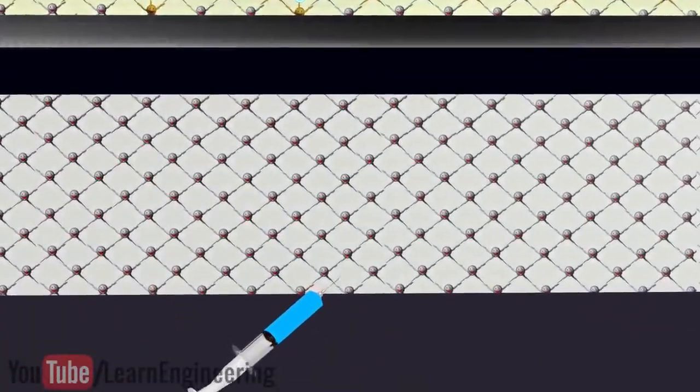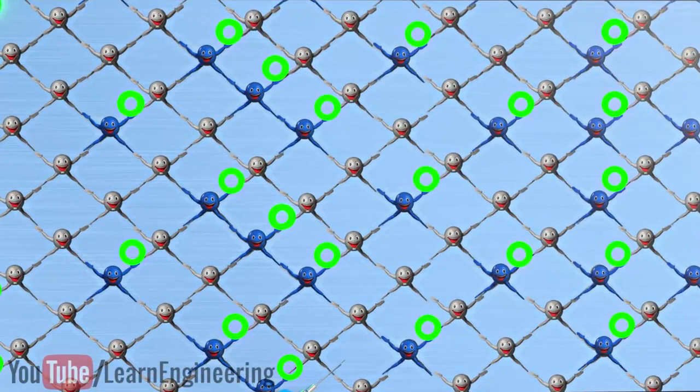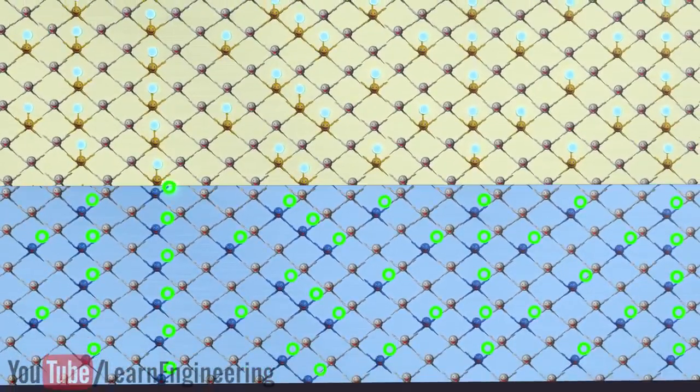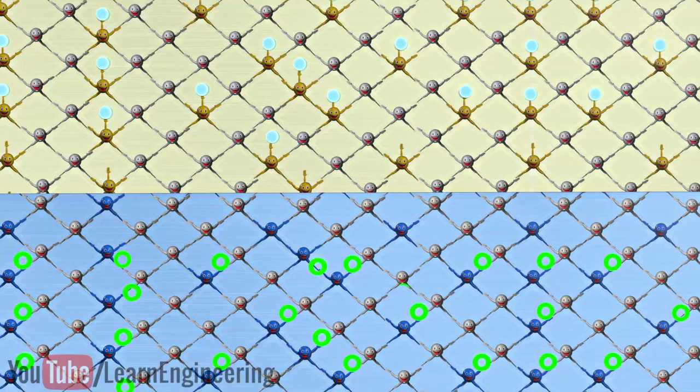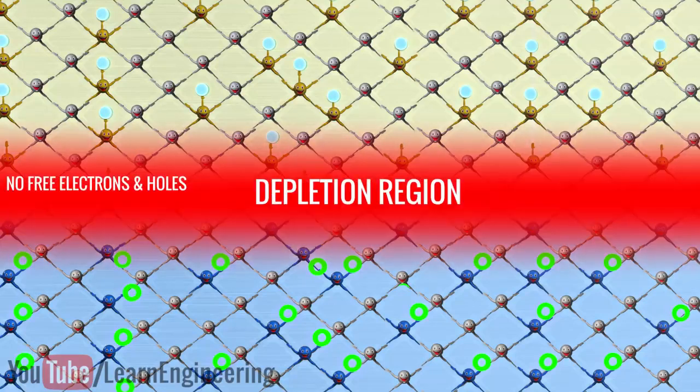Similar to n-type doping, if you inject boron with 3 valence electrons into pure silicon, there will be one hole for each atom. This is called p-type doping. If these two kinds of doped materials join together, some electrons from the n-side will migrate to the p-region and fill the holes available there. This way, a depletion region is formed, where there are no free electrons and holes.